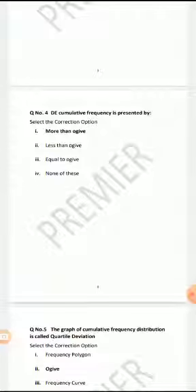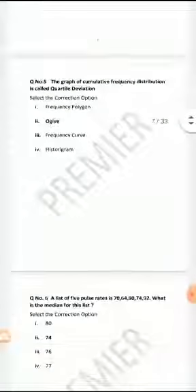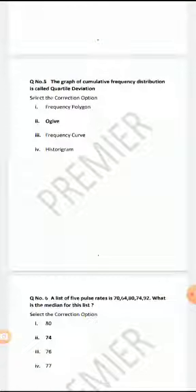In a regression line y equals a plus bx, y is called - correct answer is dependent variable. The cumulative frequency is presented by - the correct answer is more than ogive. The graph of cumulative frequency distribution is called ogive.